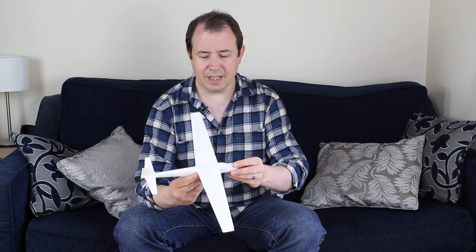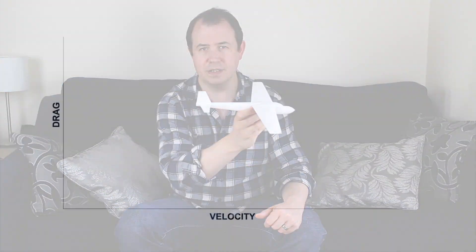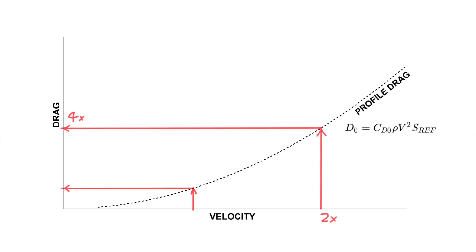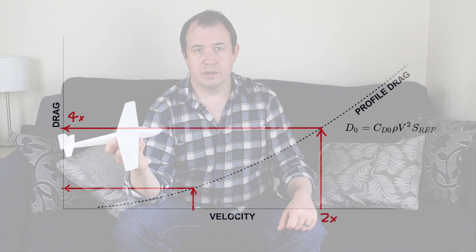This is actually a force that increases with the square of the aircraft's speed. So if the aircraft is flying along at a certain speed and you double that speed, the amount of drag on the airframe will increase by four. That means if you want to minimize the profile drag on the aircraft, you have to minimize the speed at which you're flying.